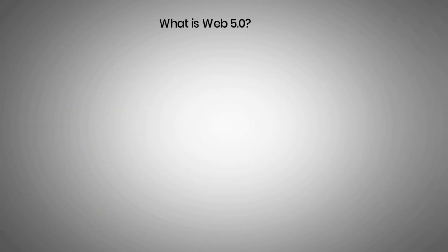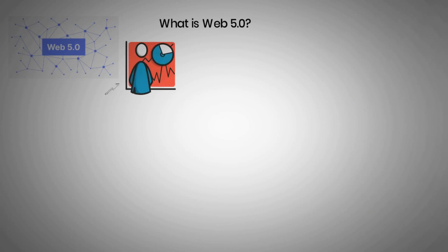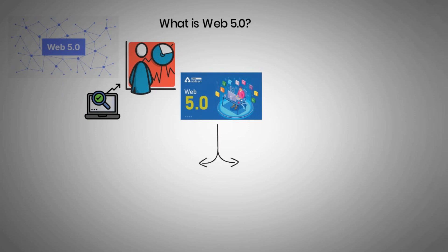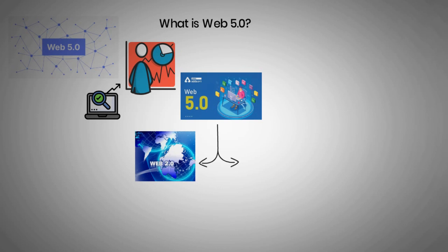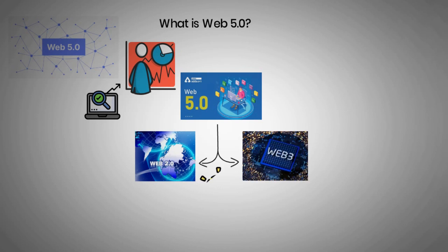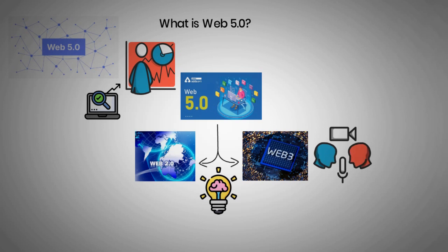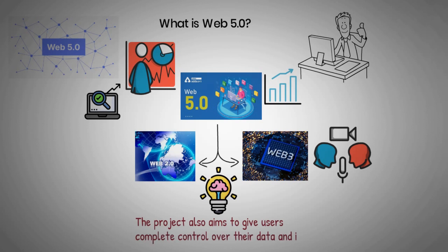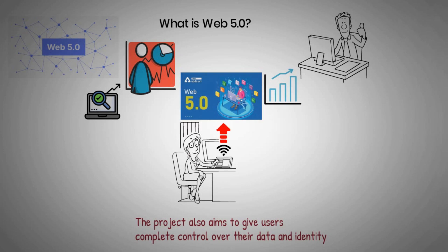What is Web 5.0? Web 5.0 is a decentralized platform that allows developers to create web applications using verifiable credentials. This platform is designed to give users control over their data. Web 5.0 is still in development, but there are already some indications about what the platform will look like. Web 5.0 is expected to be a mix of Web 2.0 and Web 3.0, and will concentrate on creating a linked internet that is both intelligent and emotional. Web 5.0 could change the status quo where the internet doesn't know how users feel and does not own user data.